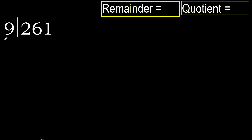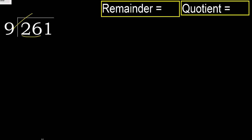261 divided by 9. 2 is less, therefore next. 26 is not less, therefore with 26. 9 multiplied by which number is nearest to 26, but not greater.